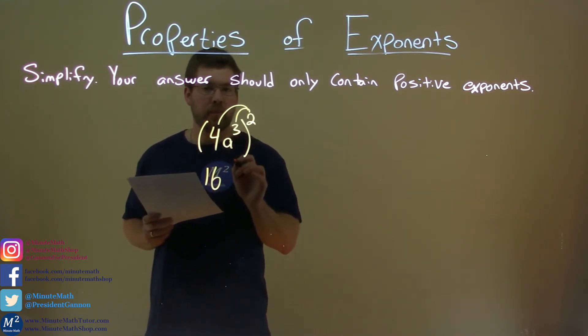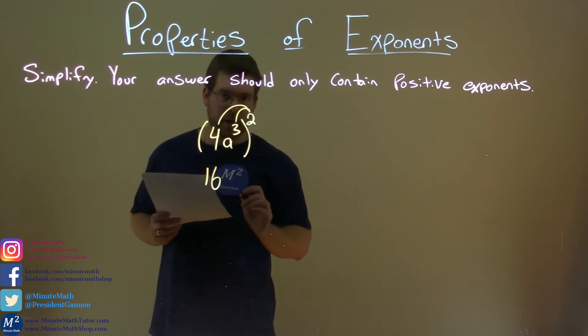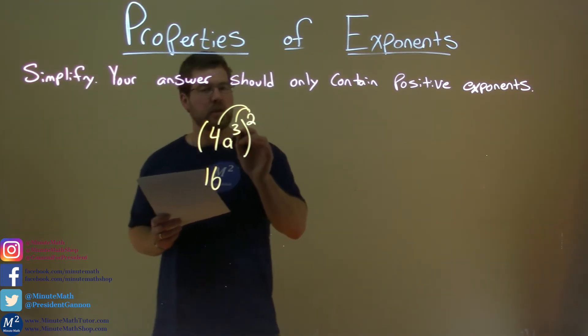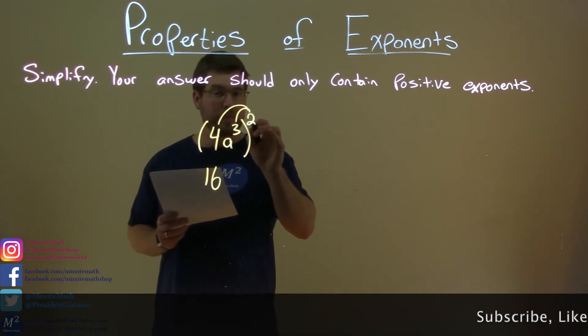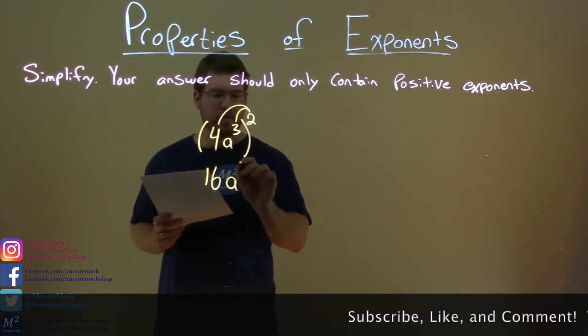Now we have a to the third power, all squared. Well, a to the third power all squared, we multiply the exponents here. 3 times 2 is 6, so we have a to the sixth power.